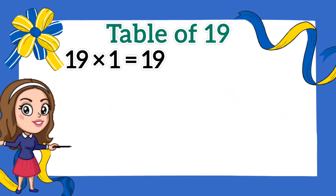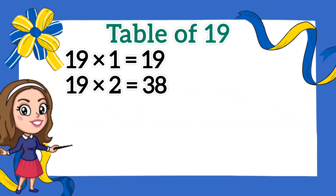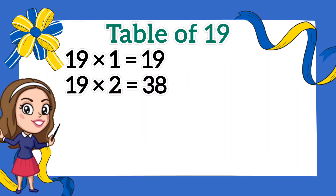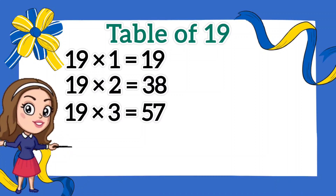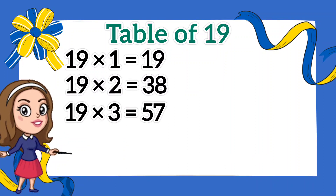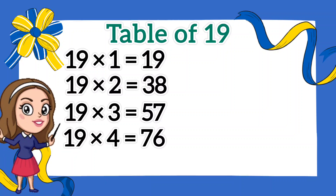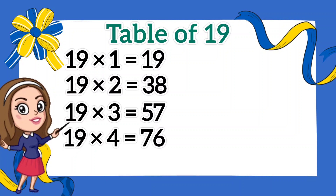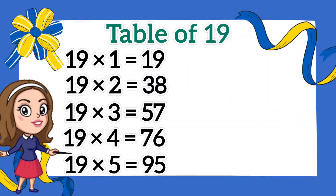Nineteen ones are 19. Nineteen twos are 38. Nineteen threes are 57. Nineteen fours are 76. Nineteen fives are 95.